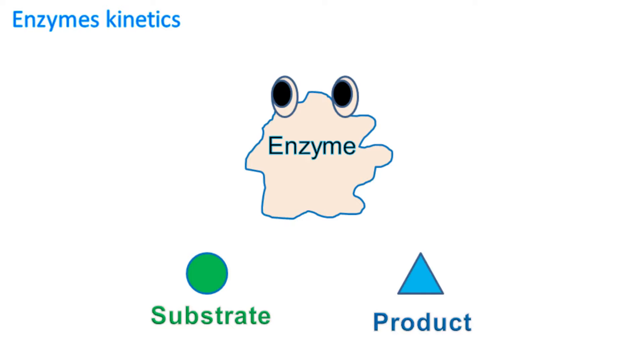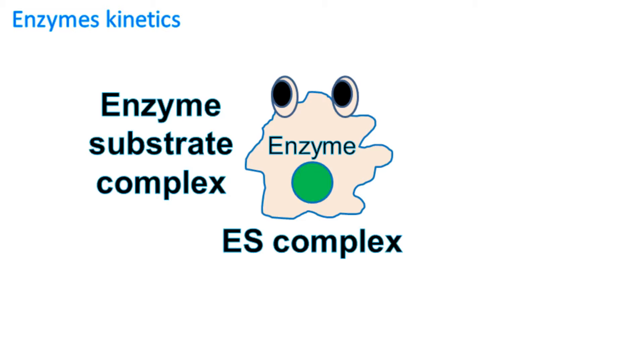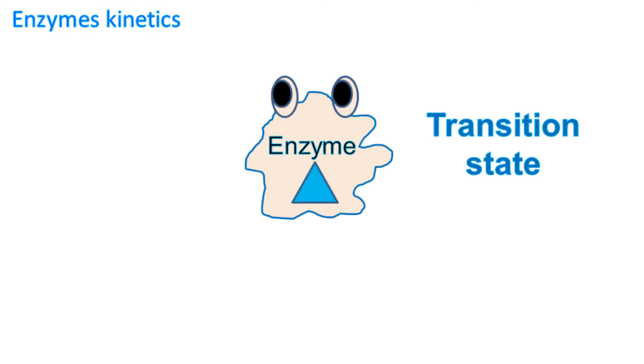During enzymatic reaction, the enzyme binds the substrate and forms enzyme-substrate complex. The ES complex is usually in a transition state in which substrate is converted into a product and the product is finally released.